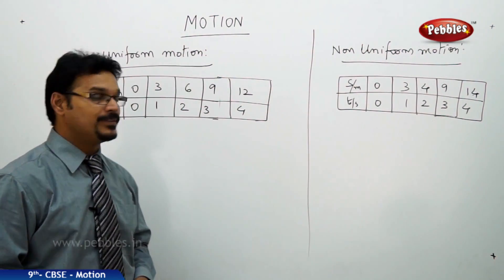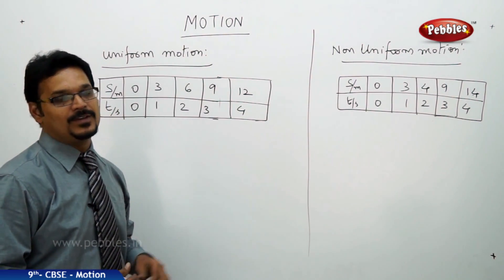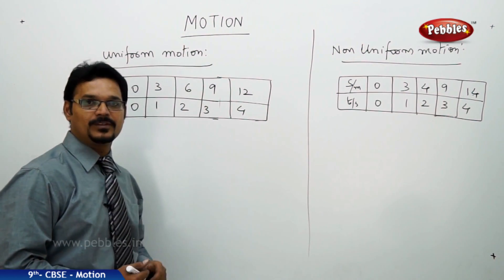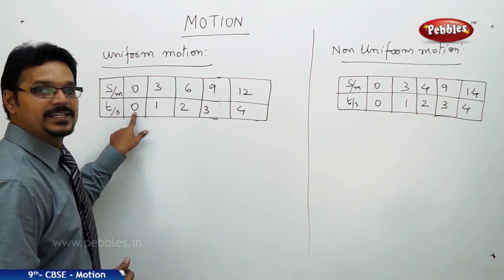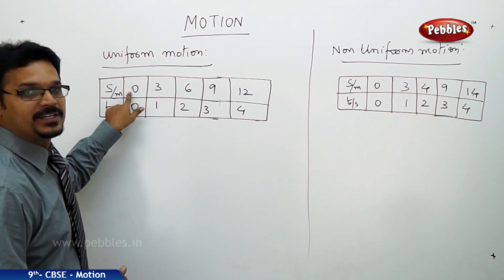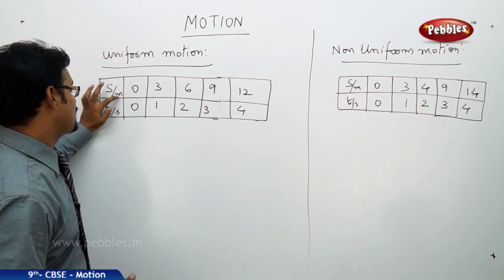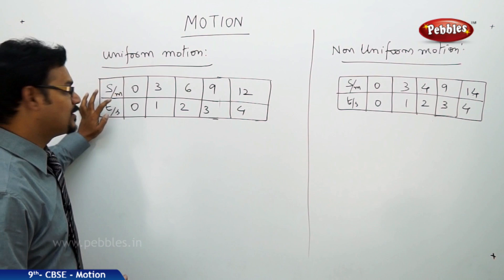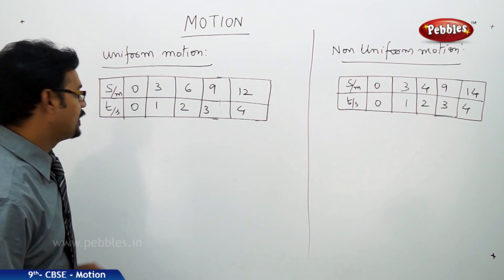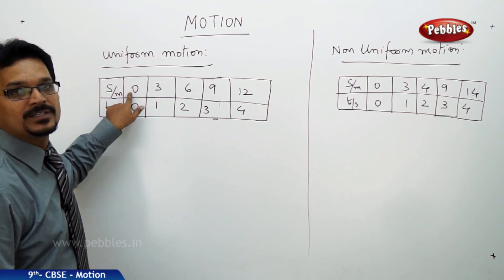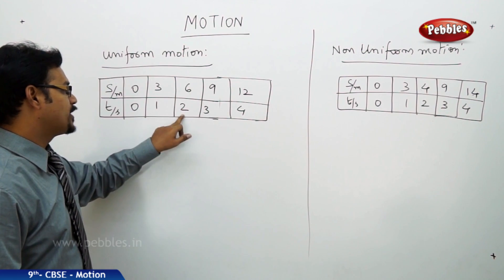Now, coming to uniform motion, the name tells the uniform. Uniform means constant, fixed. So, see this table to understand what is this motion. In 0 seconds, the distance traveled is 0 seconds. S means distance, t means time, s/m means distance slash the unit of distance meters. Time slash s, the unit of time seconds. At 0 seconds, distance is 0, means the body is at rest. At 1 second, it covered 3 meters, 2 seconds 6 meters.